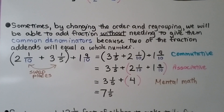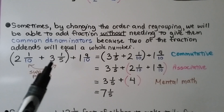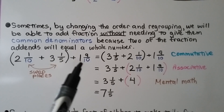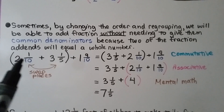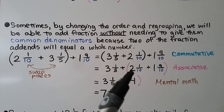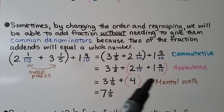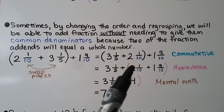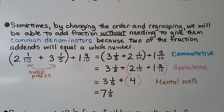Sometimes, by changing the order and regrouping, we can add fractions without needing common denominators because two of the fraction addends will equal a whole number. We have 2 and 1 tenth plus 3 and 1 fifth in parentheses, and we need to add 1 and 9 tenths. Using the commutative property, we swap their places. Then, using the associative property, we group 2 and 1 tenth plus 1 and 9 tenths — because 1 tenth plus 9 tenths is 10 tenths, making 1 whole. That means we have 4 whole. We add the 3 and 1 fifth, and using mental math we get 7 and 1 fifth.